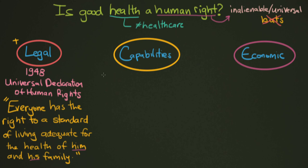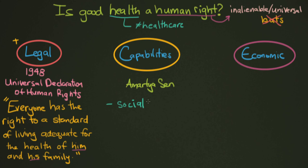Now let's look at something a little bit newer — the capabilities perspective, developed by a famous economist and philosopher from India named Amartya Sen. He talks a lot about development and has written extensively about it over the years. He talks about the 'right' part of human rights as being not so much a legal right, but a social ethic — something that we as a society say people should have these rights because we're good people, we have resources, and we should share them.